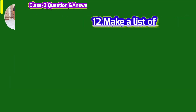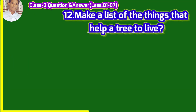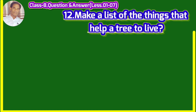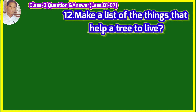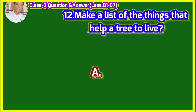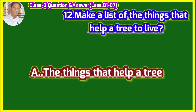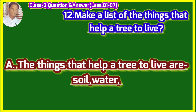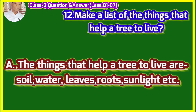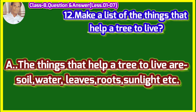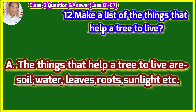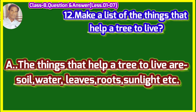Make a list of the things that help a tree to live. (Unn vastu hoon ki suchi banao jo ek vriksh ko jivit rakhne me sahayta deti hain.) The things that help a tree to live are: soil, water, leaves, roots, sunlight, etc. Vastu hoon jo vriksh ko jivit rakhne me sahayta karti hain: mitti, paani, patiyan, jad tatha surya ka prakaas, aadi.